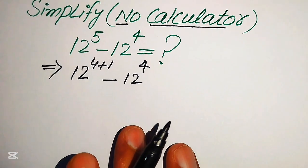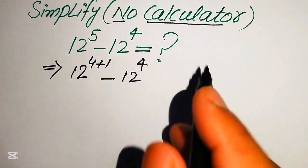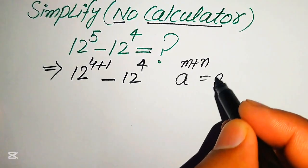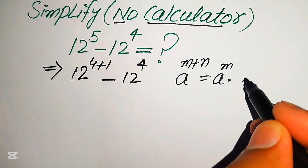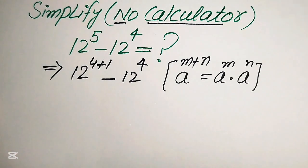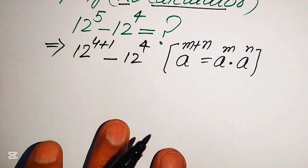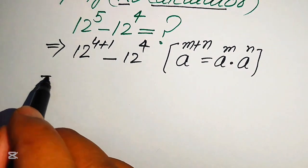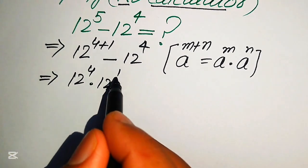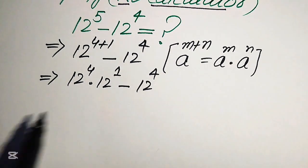In the next step we use the exponent law: if we have a to the power of m plus n, it equals a to the power of m multiplied by a to the power of n. Applying this law to the first term, it becomes 12 to the power of 4 multiplied by 12 to the power of 1, minus 12 to the power of 4.